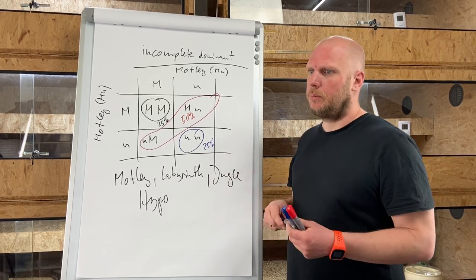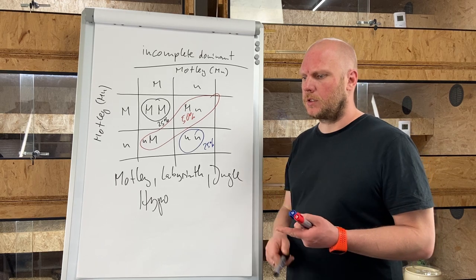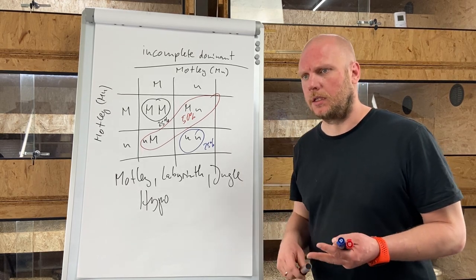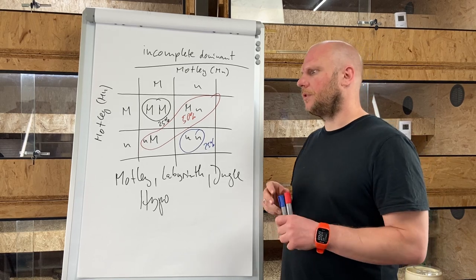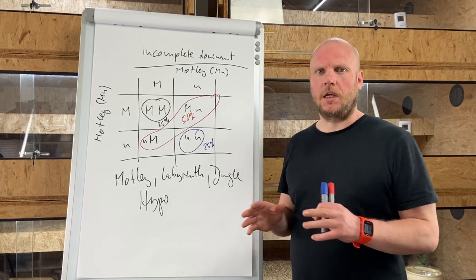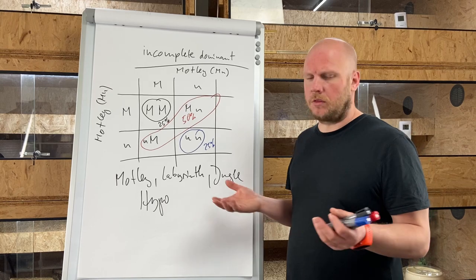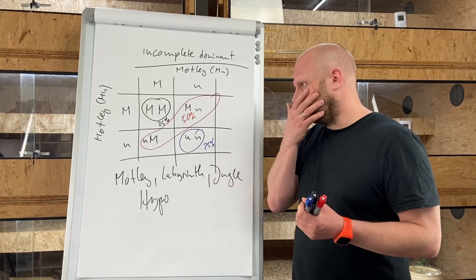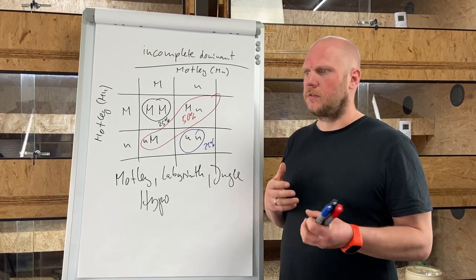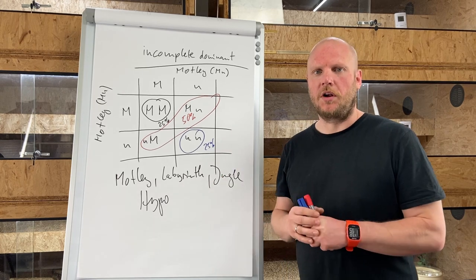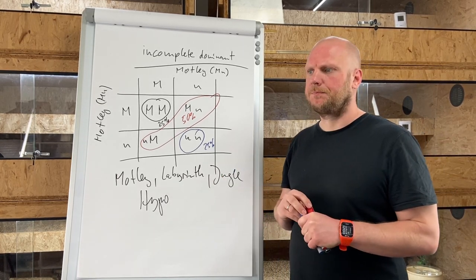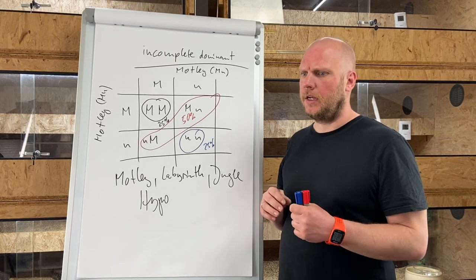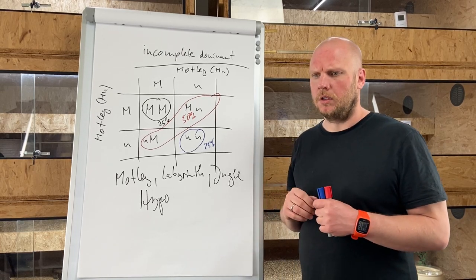So we did produce a litter back in 2012. We produced a super motley het albino and albino super motley and they were feeding like the perfect animal. I think they even started to feed first without any problems, but they had a very small growth rate.